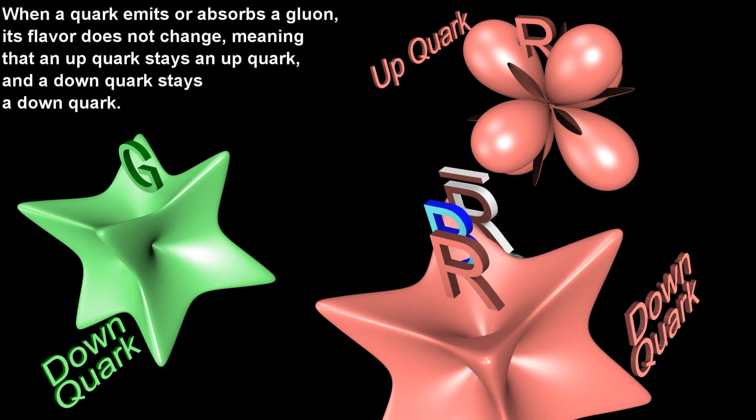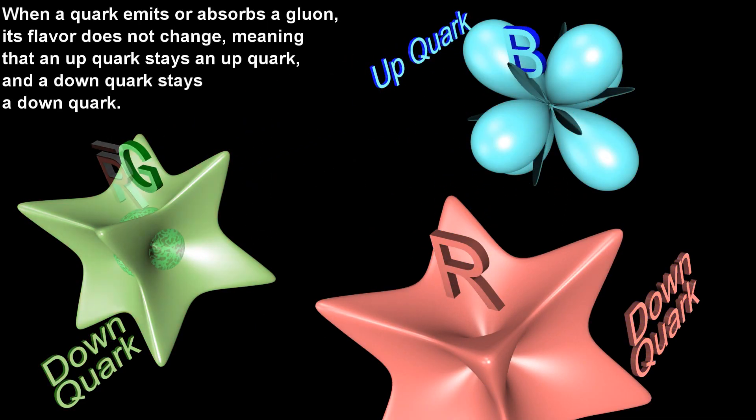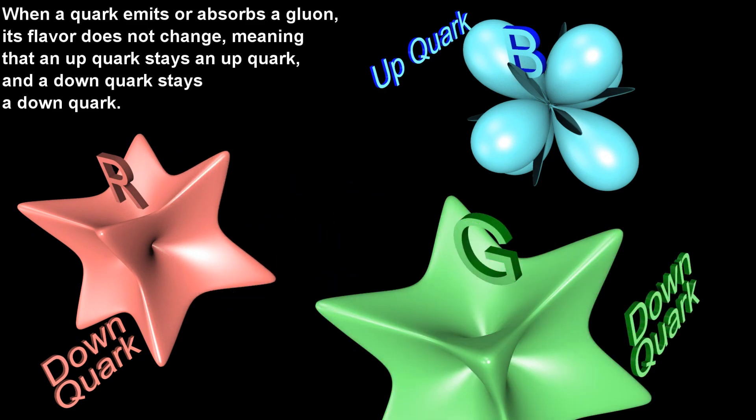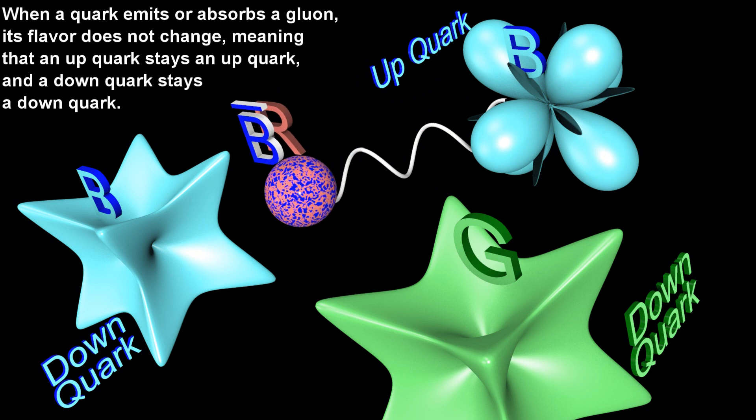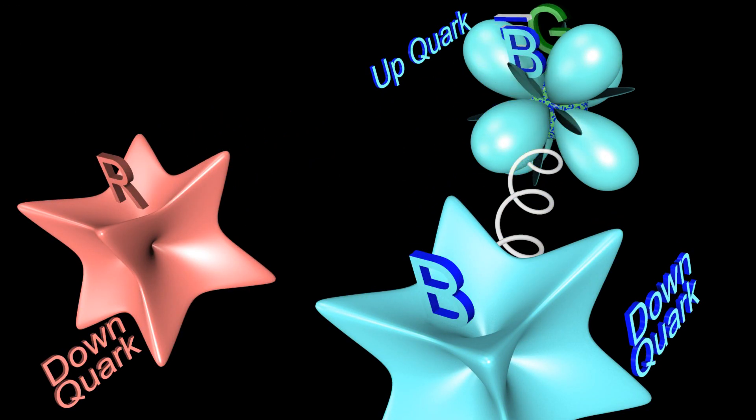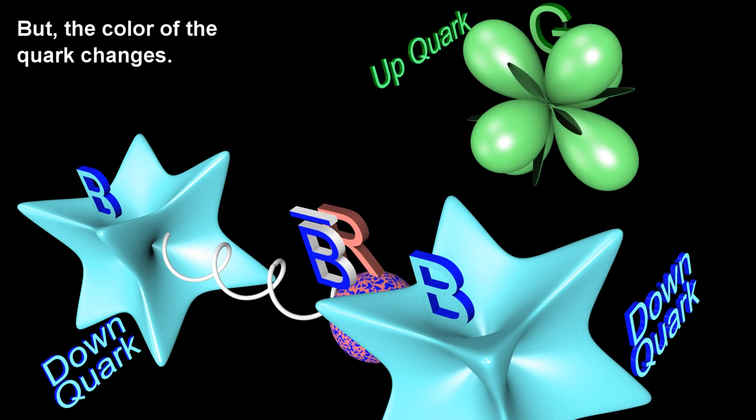When a quark emits or absorbs a gluon, its flavor does not change, meaning that an up-quark stays an up-quark, and a down-quark stays a down-quark. But the color of the quark changes.